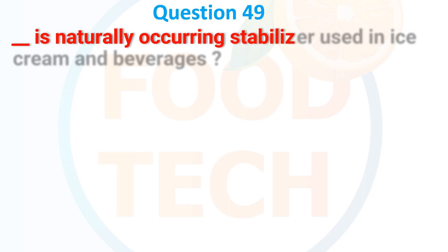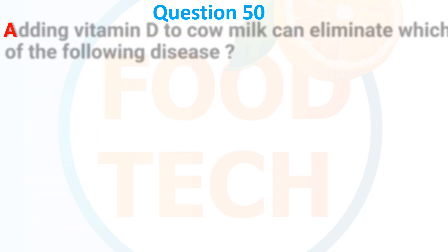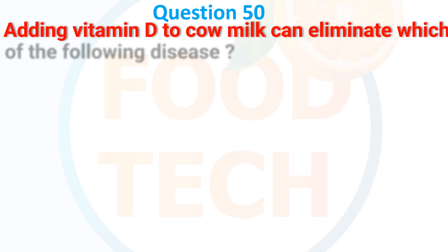Nisin is: A. Narrow spectrum antibiotic, B. Wide spectrum antibiotic, C. Stabilizer, D. Nutritional supplement. The answer is B. Wide spectrum antibiotic.